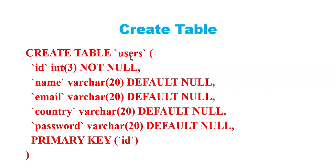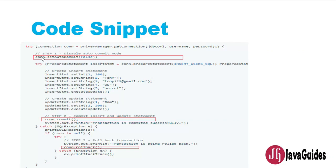In this example, we are going to use a simple database table called 'users' with columns: id, name, email, and password. Here is the code snippet. At the beginning, we disable auto-commit mode, then we can execute multiple statements like insert, update, or delete. These statements are grouped as a transaction, and then we commit the transaction using the commit method. If any statement fails, we call the rollback method to roll back the entire transaction.